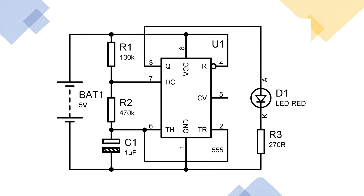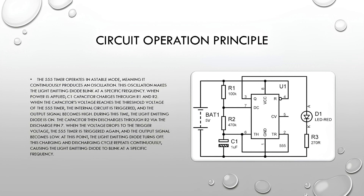Light-emitting diode flasher circuits are used in various applications such as indicator lights, warning signals, and decorative lighting. Now, let's examine the operation principle of a simple light-emitting diode flasher circuit.